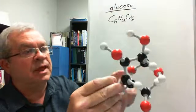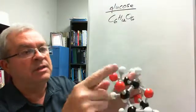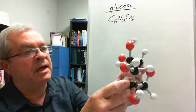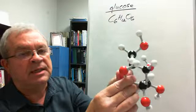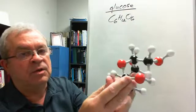And so, there's 6 carbons - those are the black balls - 12 white ones, the hydrogens representing hydrogen atoms, and 6 red ones representing 6 oxygen. One molecule of glucose, C6H12O6.